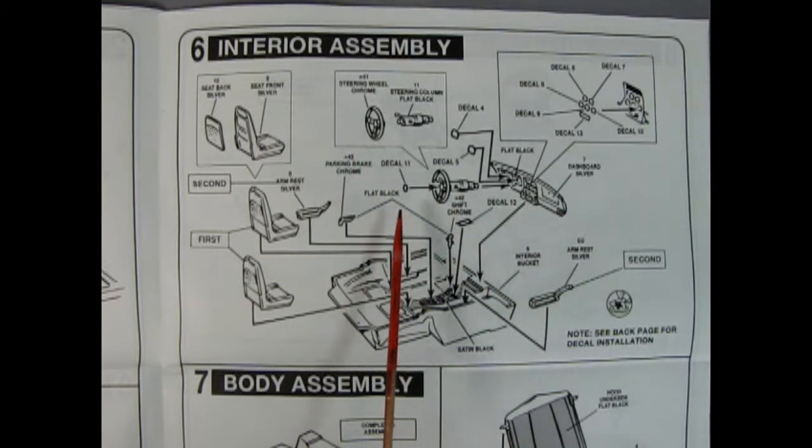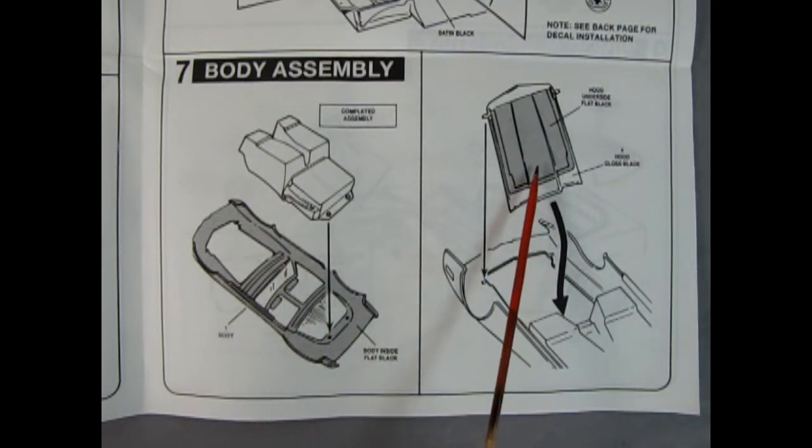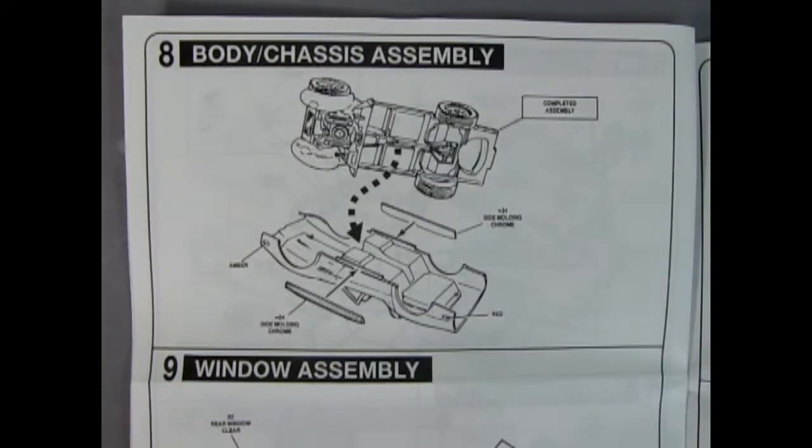Step seven is our body assembly and this is quite straightforward. The interior bucket tub that's all complete now drops into place inside our body and then we have our underside hood as well which will just pop into place and those little pins fit into little grooves under the body.